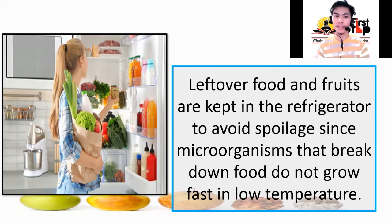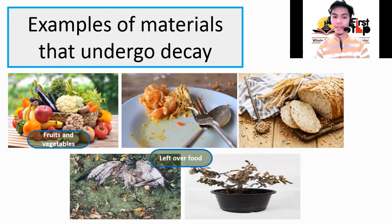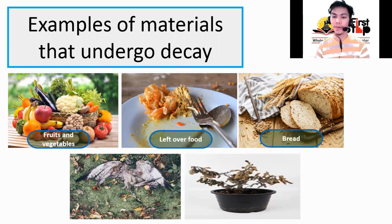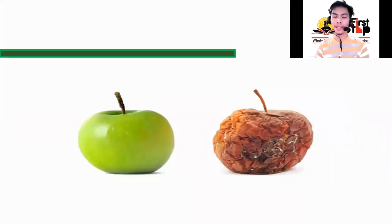What are examples of materials that undergo decay? Fruits and vegetables, leftover food, bread, dead animals, and dead plants. Let's go back to our question a while ago.